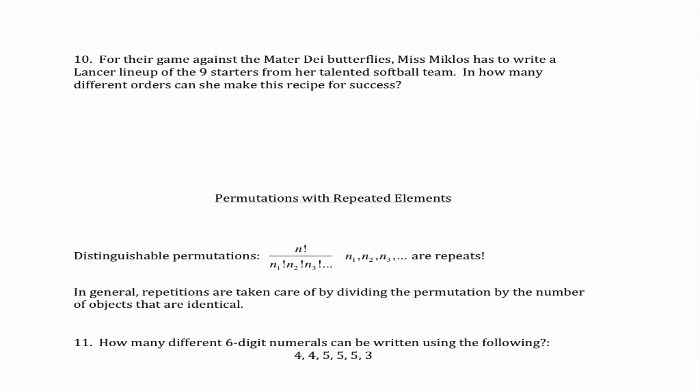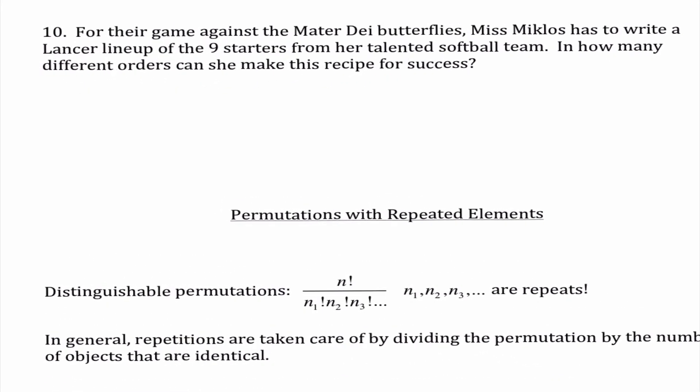Okay time for one of my favorite ones. So it says for their game against the modern day butterflies, get it monarch butterflies. Miss Miklos has to write a Lancer lineup of the nine starters from her talented softball team. In how many different orders can she make this recipe for success? So first thing we need to think about does the order matter? And yes it does because if you're batting first versus if you're batting fifth that's a very different lineup. Okay it says that I've already chosen the nine starters.